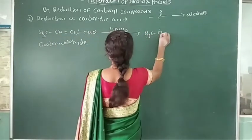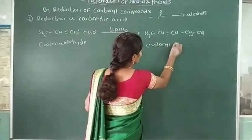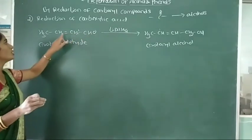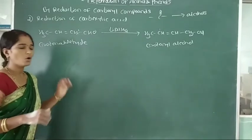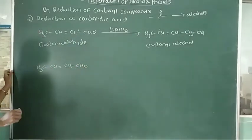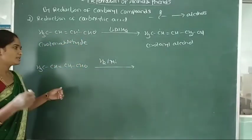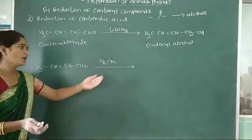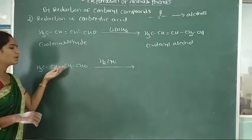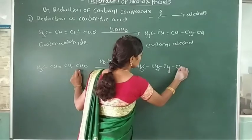Therefore, here formation of CH3CH=CHCH2OH — formation of propenyl alcohol. Lithium aluminium hydride reduces only the aldehyde molecule but does not reduce the carbon-carbon double bond. Suppose CH3CH=CHCH2OH — this propanal reacts with hydrogen in presence of nickel catalyst. This nickel catalyst will reduce both the double bond as well as the aldehyde molecule. This reducing agent reduces both carbon-carbon double bond as well as carbonyl group. Then here the product is CH3CH2CH2CH2OH.